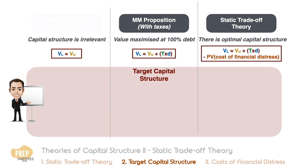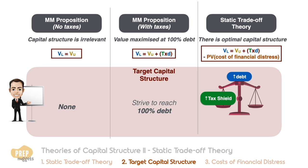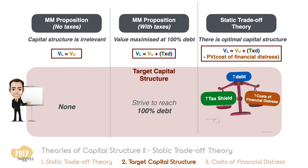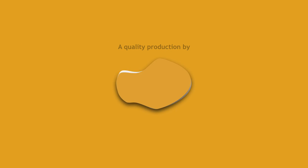In summary: under MM proposition with no taxes, managers do not have a target capital structure because capital structure is irrelevant. Under MM proposition with taxes, managers should theoretically try to reach 100% debt, as that is where firm value is maximized due to maximum tax shield. The static trade-off theory recognizes the benefits of increased tax shield when debt increases, but also acknowledges the increase in cost of financial distress. Managers following this approach will seek to balance the benefits of debt with the costs of financial distress and identify an optimal capital structure.